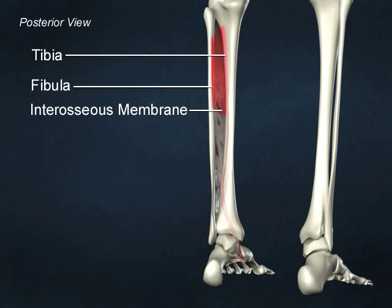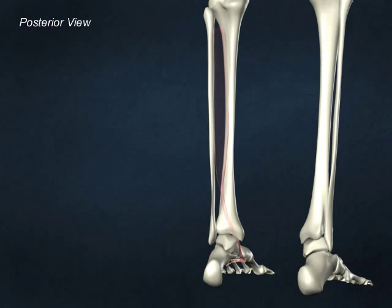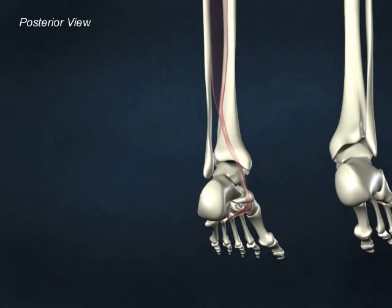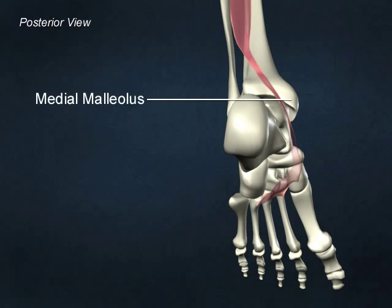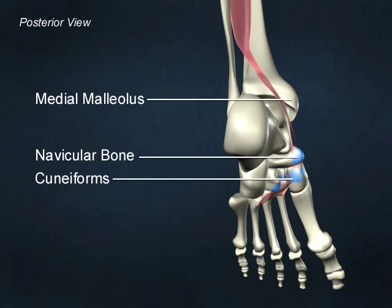The tendon of tibialis posterior passes posterior to the medial malleolus of the tibia and inserts onto the medial surface of the navicular bone, the plantar surfaces of the three cuneiforms, and to the bases of metatarsals 2 through 4.